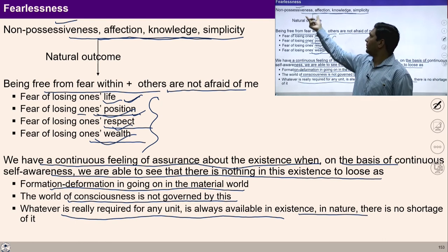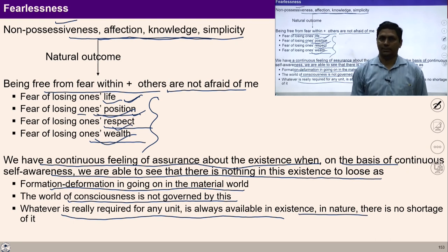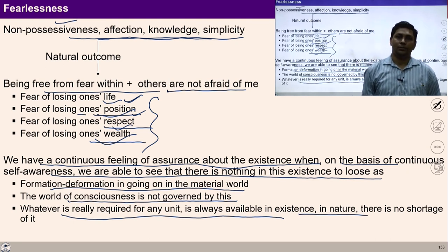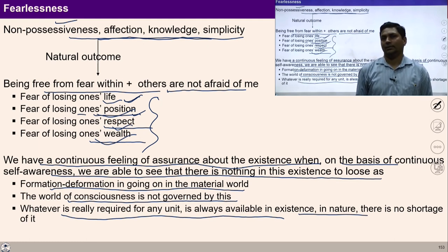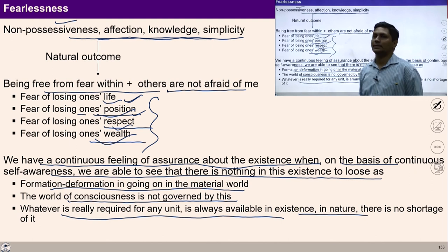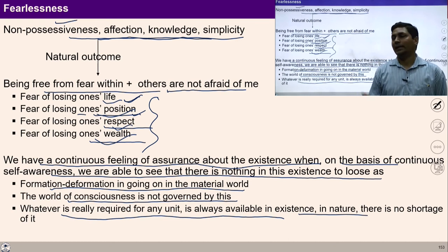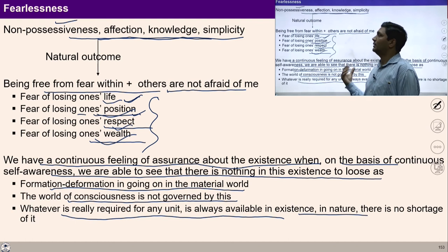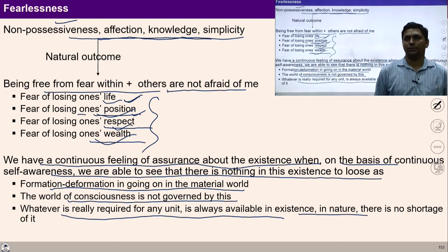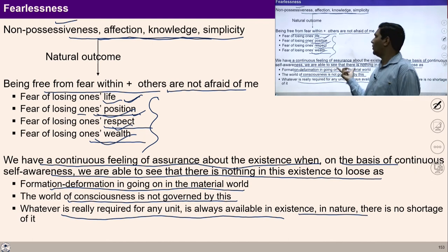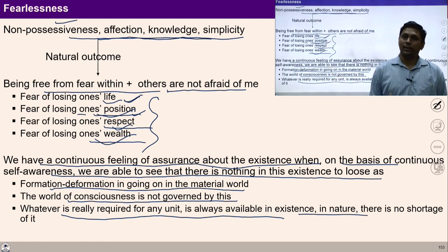With this formulation of non-possessiveness, affection, knowledge, simplicity, and fearlessness, life may be lived in a fulfilling manner. With this understanding, there is harmony in society; we become cooperative for each other and are able to see our participation with each other. This formulation gives us a way to live a fulfilling life, to ensure harmonious social structures, and helps us understand harmonious life and our participation for a harmonious society.